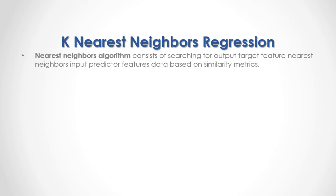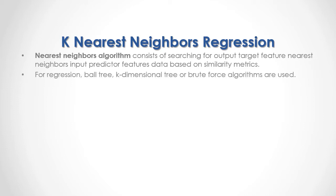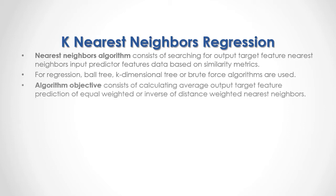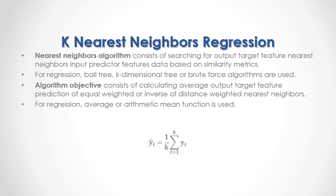The Nearest Neighbor Algorithm consists of searching for output target feature nearest neighbors' input predictor features data based on similarity metrics. For regression, ball tree, k-dimensional tree, or brute force algorithms are used. The algorithm objective consists of calculating the average output target feature prediction of equal-weighted or inverse-of-distance-weighted nearest neighbors. For regression, the average or arithmetic mean function is used. As a formula, the output target feature prediction equals 1 divided by k — where k is the number of nearest neighbors — multiplied by the sum from the first to the last of the nearest neighbor's position output target feature data.